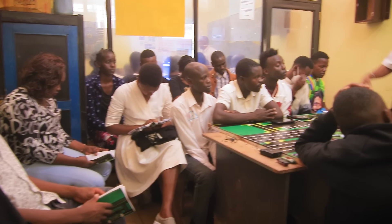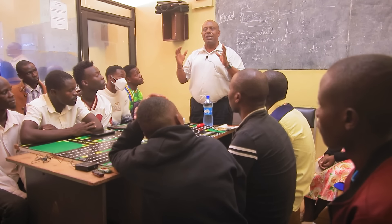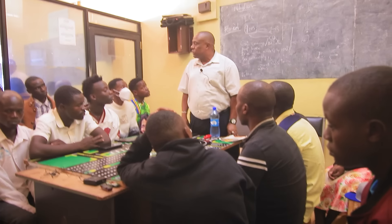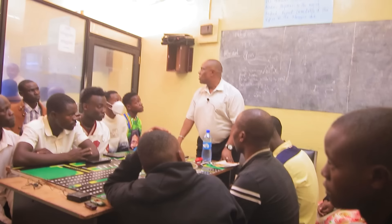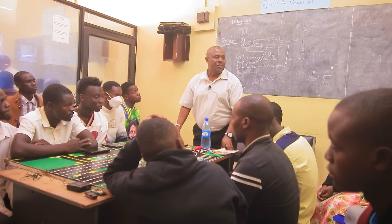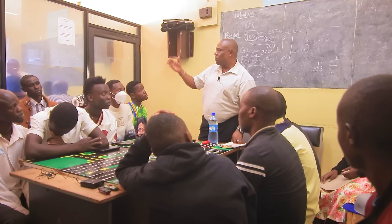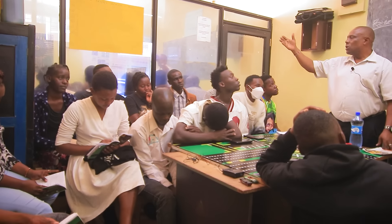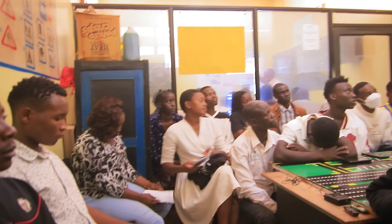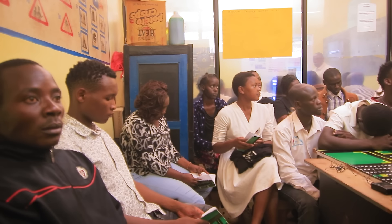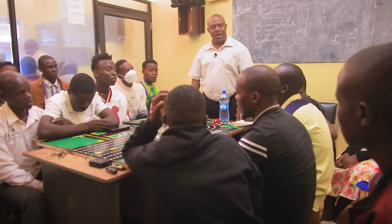If you are stopped by a uniformed traffic police officer and security lights show that you have to continue going, who do you obey and why? You are supposed to obey the uniformed traffic police officer, because they are mandatory.